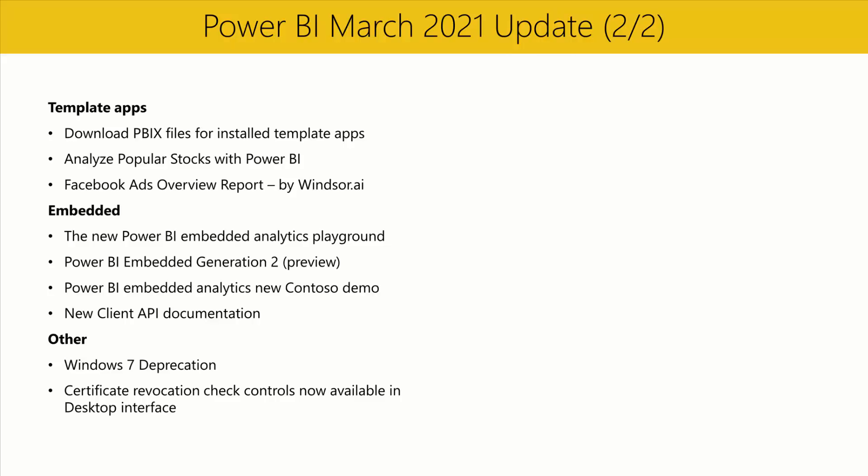Next, the preview for the second generation of Power BI Embedded became available recently for Azure subscribers during the preview period. Embedded Gen 2 offers enhanced performance, greater scale, lower barrier to entry for paginated report and AI workloads, instant scaling with no downtime, and improved metrics that allow developers to auto scale up and down with scripts or Azure alert rules. To learn more about this preview, check out the link in the video description below.